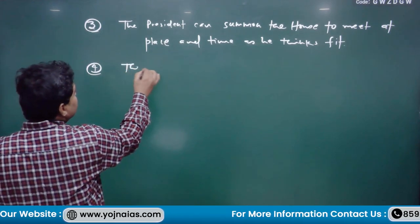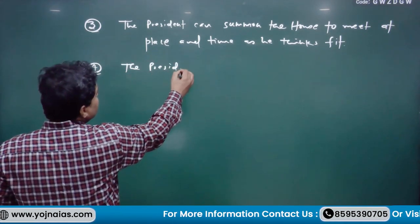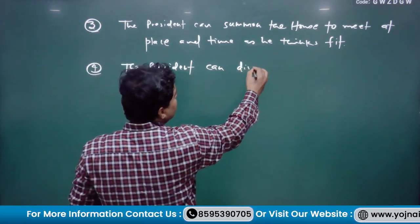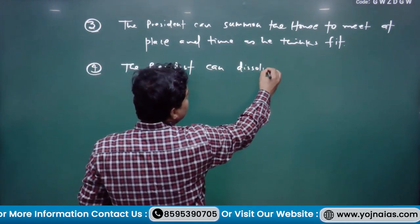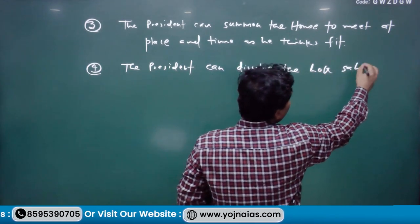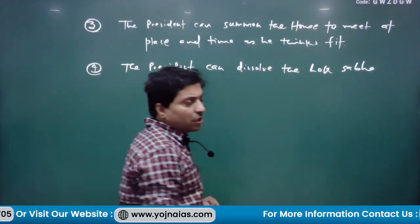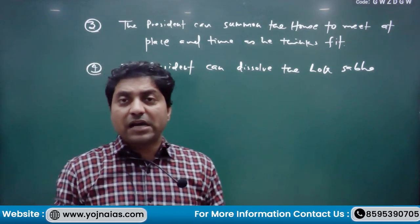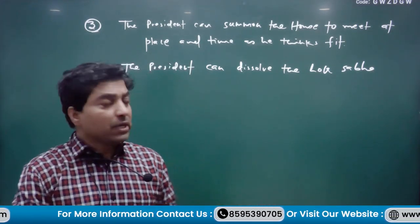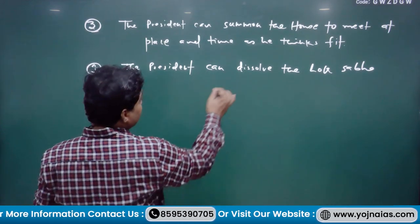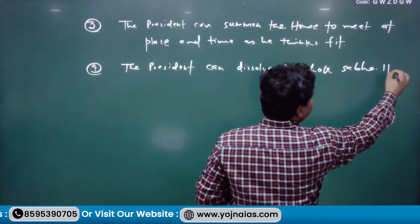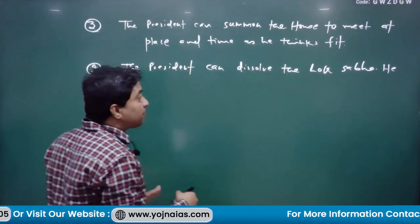Fourth, the President can dissolve the house — specifically the Lok Sabha — because the Rajya Sabha is not subject to dissolution. The Rajya Sabha is a permanent body which does not dissolve. The President can also prorogue the house.